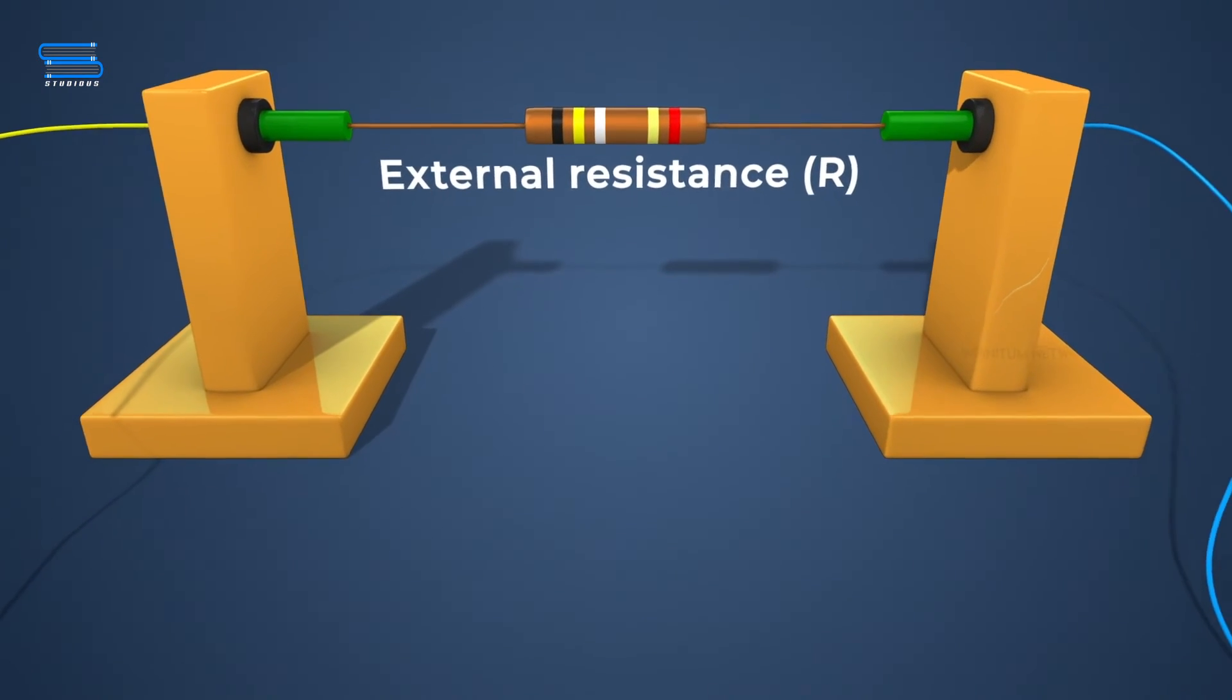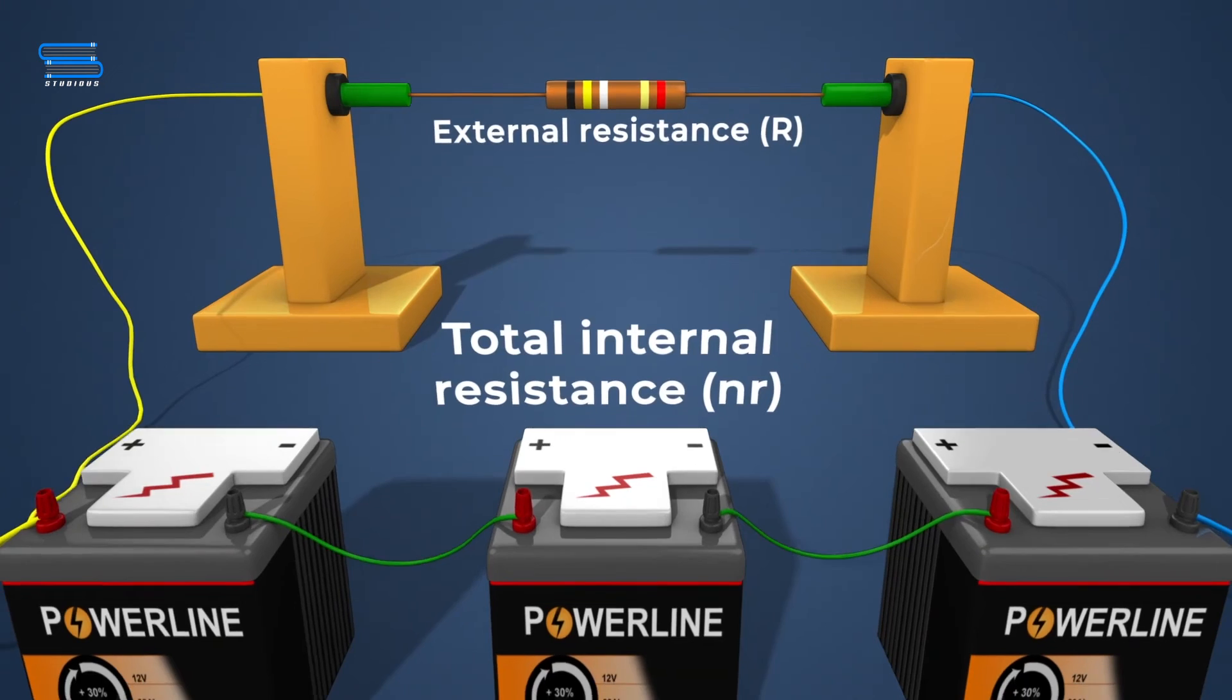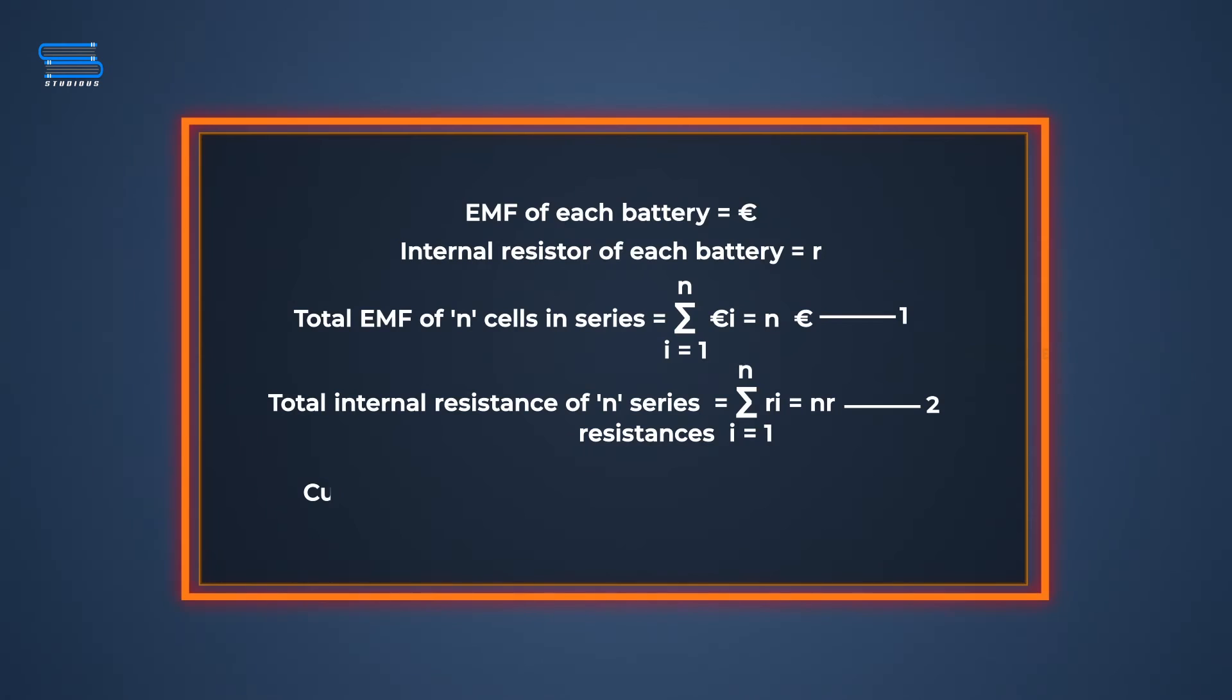The external resistance R is in series with the total internal resistance nr, and so the current through R is the following: i is equal to n epsilon divided by nr plus capital R. The same current flows through all the cells.